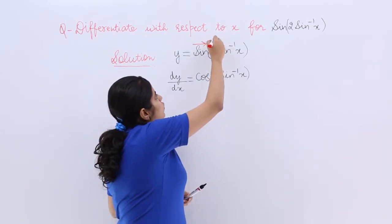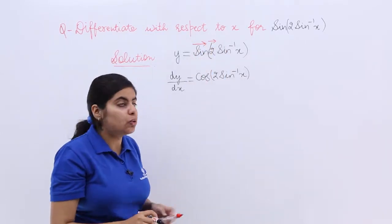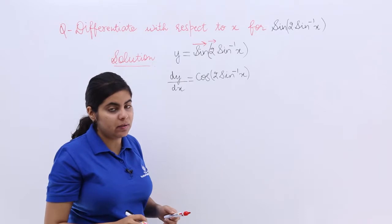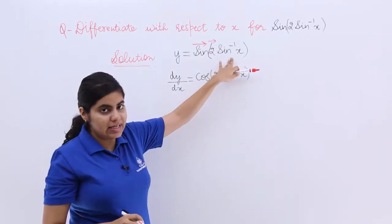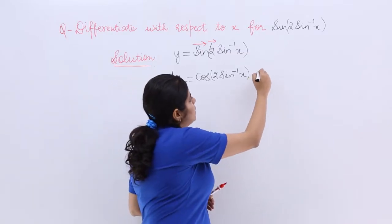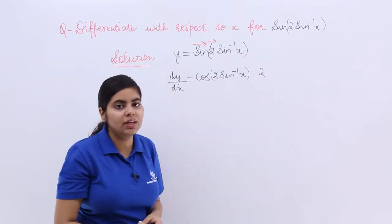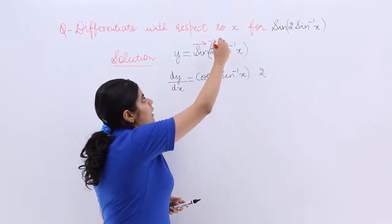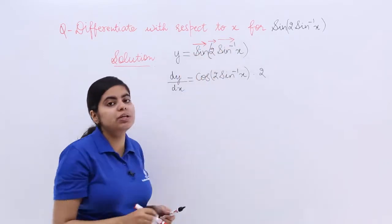After the differentiation of sin is done, you saw that there was 2. Now 2 sin inverse x was there. 2 sin inverse x has a constant 2 multiplied which will come outside. So after treating 2 you saw there is sin inverse x also.